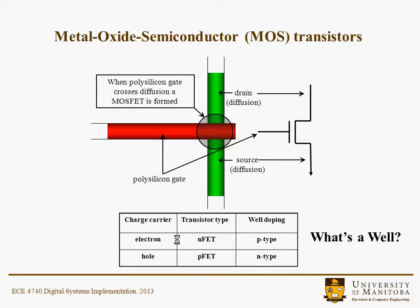Schematically, many layout programs at a very low level allow you to draw polysilicon regions representing different layers. This red region represents the polysilicon gate; the green represents diffusion. Wherever polysilicon crosses diffusion, a transistor is formed, and it would be sitting in a well. The well is just a doped region that holds an N or P-type transistor, with the opposite doping to that of the transistor.